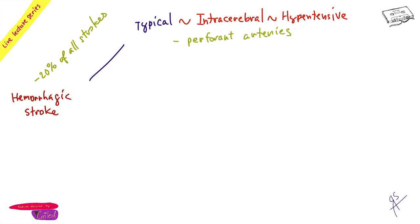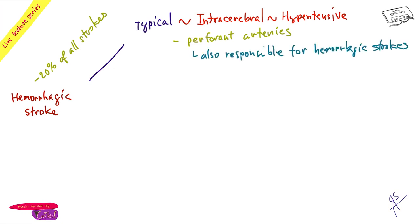It's interesting — the most common ischemic strokes are lacunar strokes, where perfusion is stopped. In hemorrhagic strokes it's the opposite: perfusion stops after the vessel bursts. The same perforating arteries are responsible in both cases, and in both it is connected to hypertension.